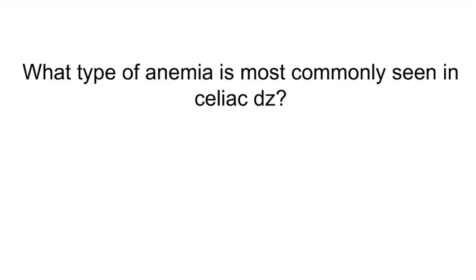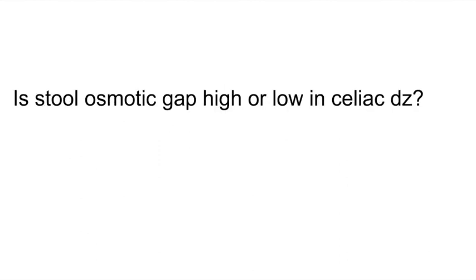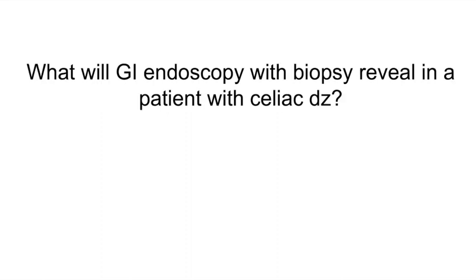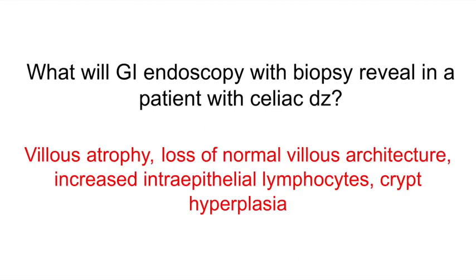What type of anemia is most commonly seen in celiac disease? Microcytic anemia. Is the stool osmotic gap high or low in celiac disease? High. Recall that patients with celiac disease present with greasy, large-volume diarrhea and weight loss, as well as osmotic diarrhea. What will GI endoscopy with biopsy reveal in a patient with celiac disease? Villus atrophy, loss of normal villus architecture, increased intraepithelial lymphocytes, and crypt hyperplasia.